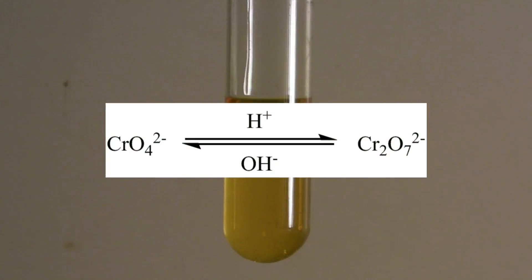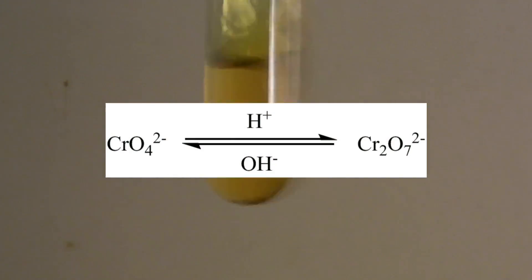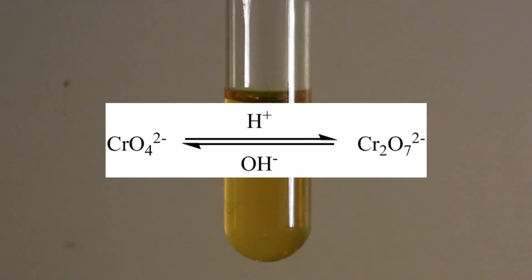In solution, chromate and dichromate exist in a chemical equilibrium, which depends on the pH of the solution.